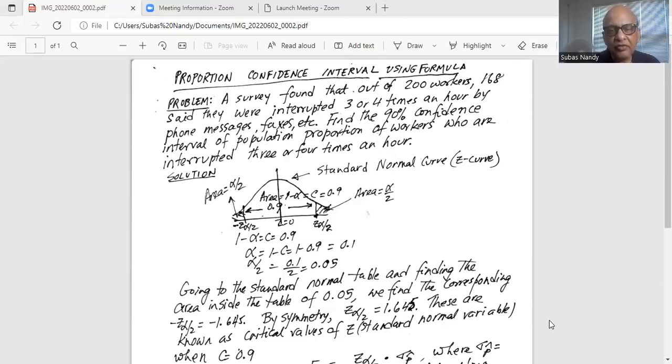On the left-hand side of the center, the Z values are negative. On the right-hand side of Z equal to zero on the horizontal axis, Z values are positive.